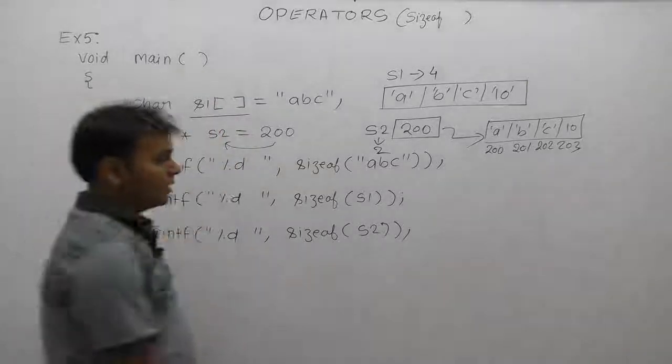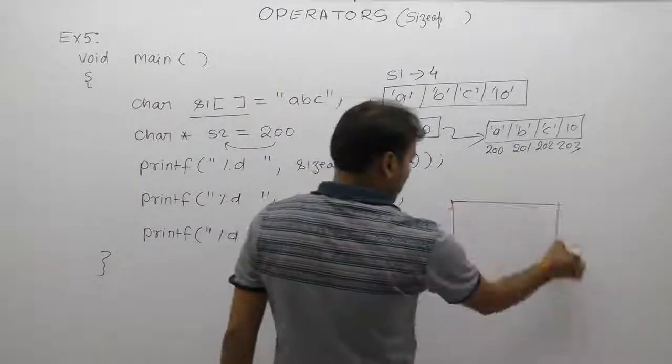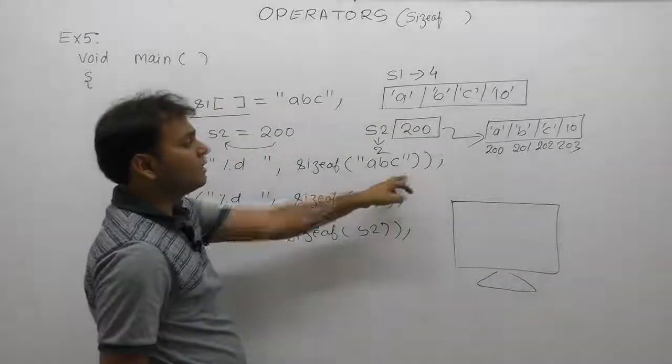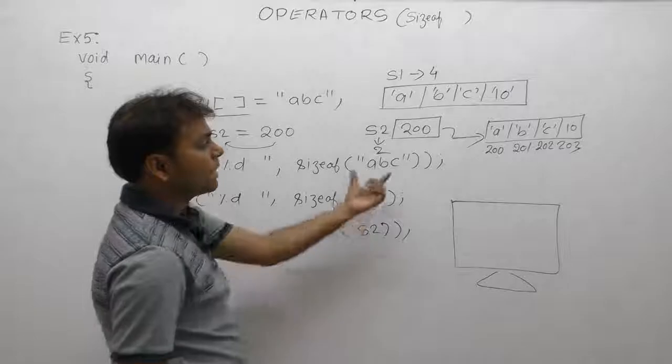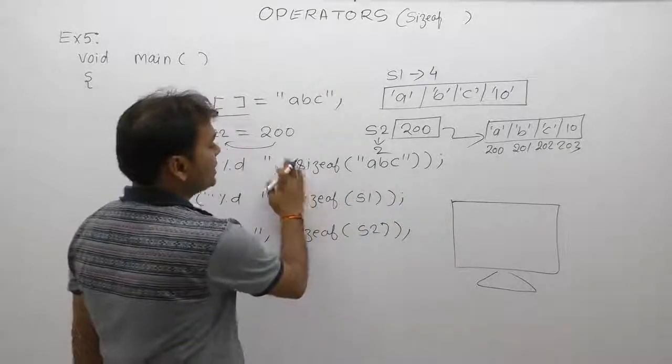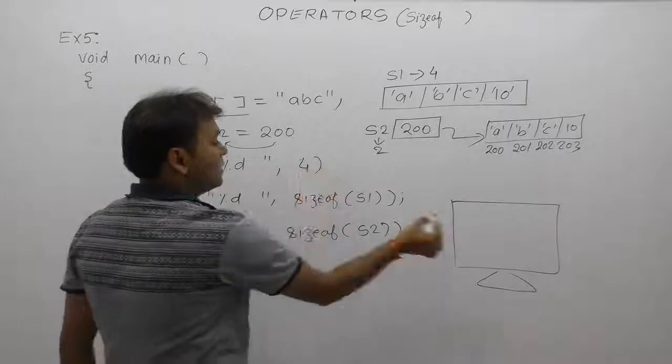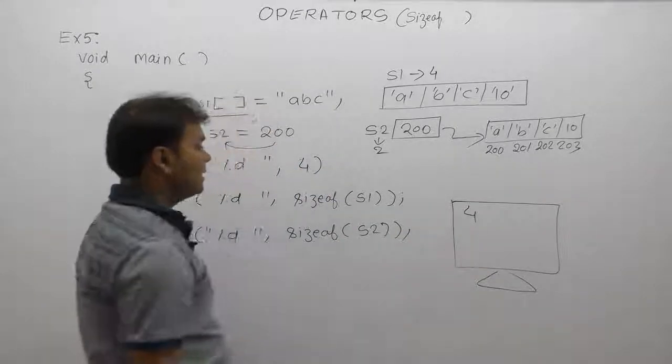This one, concentrate. First printf directly ABC. ABC has 4 bytes directly created, total bytes. Therefore, size of 4 is printed here.